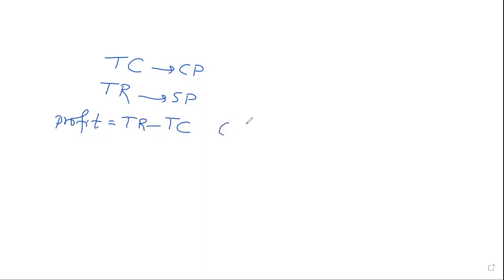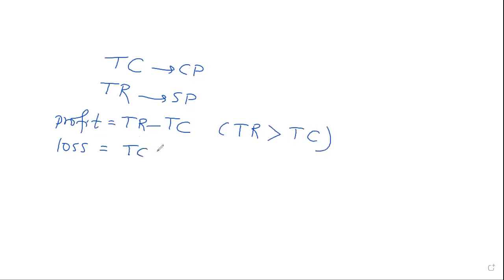So if total revenue is lower, we have a loss. Profit is TR minus TC. Loss formula: TC minus TR. When TC is greater than TR, the total cost is greater than total revenue, and obviously the answer is a loss. So profit formula is TR minus TC, and loss formula is TC minus TR.